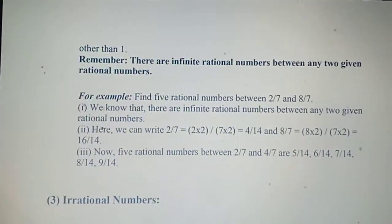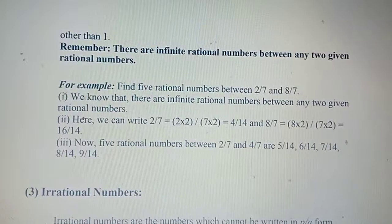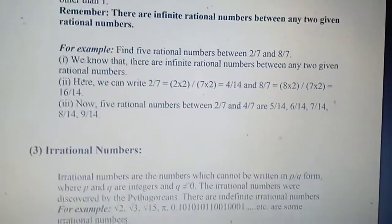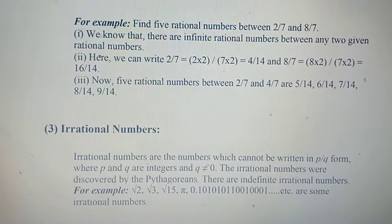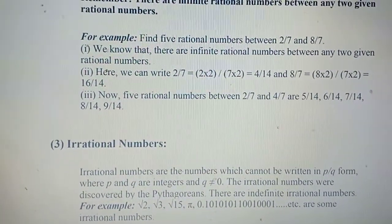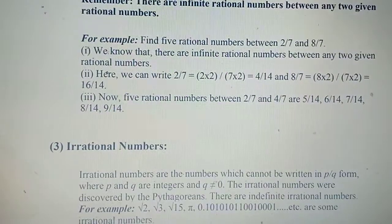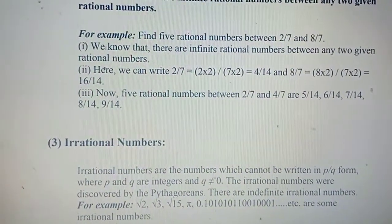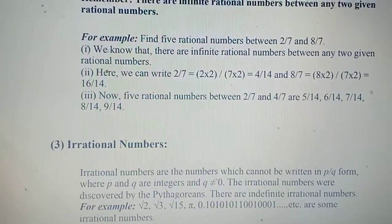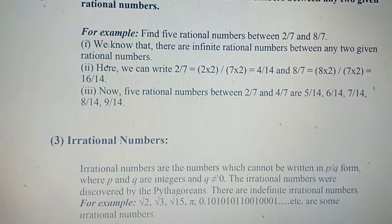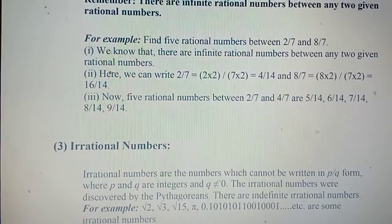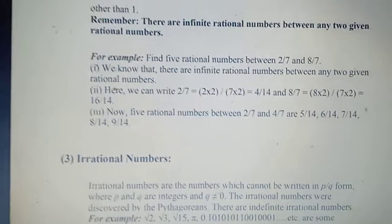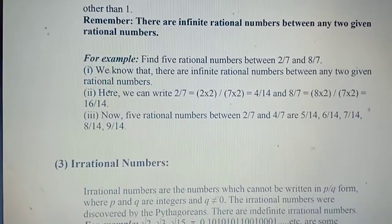One important thing: there are infinite rational numbers between any two given rational numbers. Here we will solve an example — find 5 rational numbers between 2/7 and 8/7. As we know there are infinite rational numbers between 2 rational numbers, and we have to find 5. So first, we check whether the denominators are the same or not. Yes, the denominators are the same.